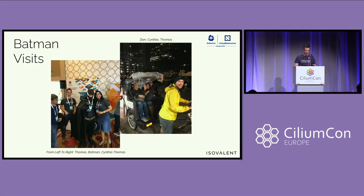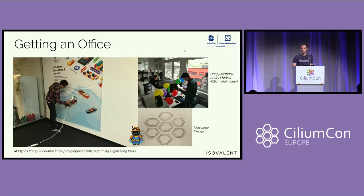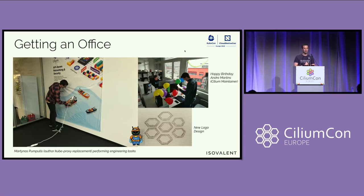We also had visits — Batman visited us at an open source summit. You see early team members Cynthia Thomas, as well as Dan and myself, taking a ride to a conference venue. The company started to grow, so we got our first offices. You see Martinez — actually the author of the kube-proxy replacement feature — ironing the Cilium banner we took back from one of the conference venues. We also got the first logo — well, we actually changed our logo. At some point we figured this is getting bigger; we designed the Cilium logo as we know it today.